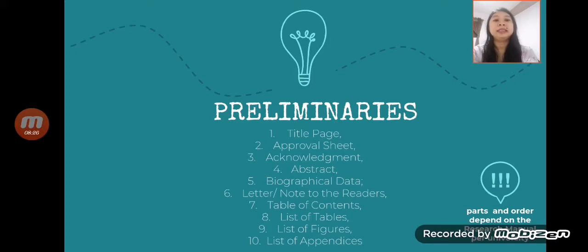Number six is again dependent on the university. There are some universities who are requesting to give a letter or note to the readers. This is the time that they are telling the readers how hard, how much effort that they've given to the research, and what possible inspiration can they extract from that kind of research. Then seven, table of contents. This is just easy, but you just have to follow the rules or the form and style of your university. Then the list of tables, figures, and also the appendices.